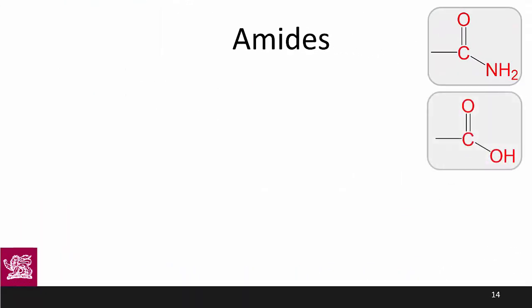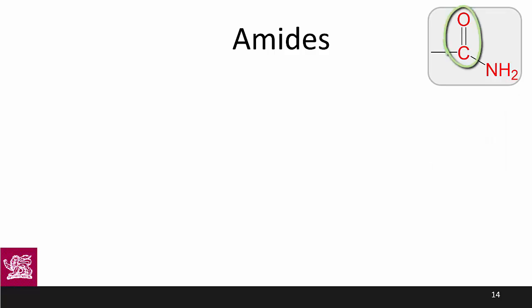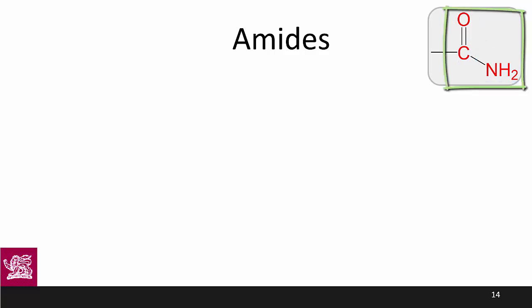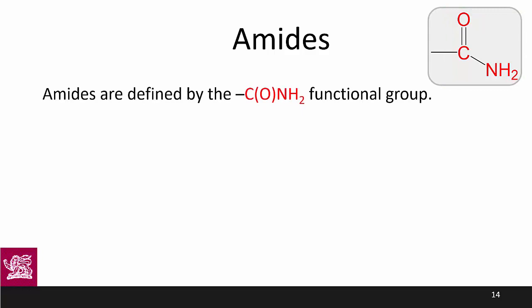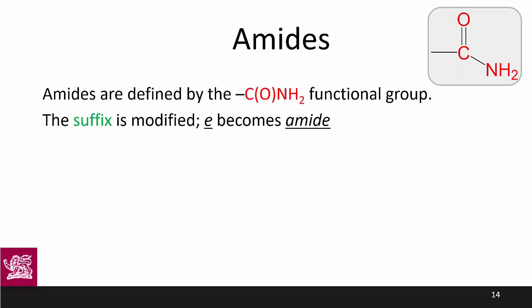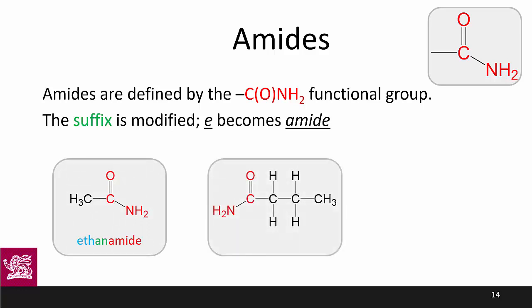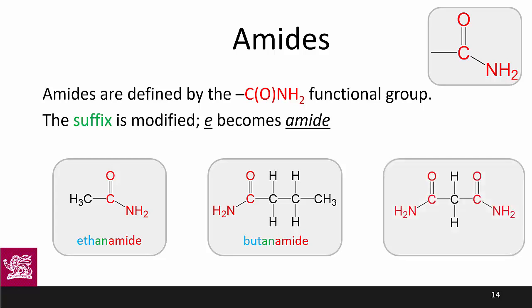Moving on now to amides — the cousin to carboxylic acids. They are one carbon double bonded to oxygen, and the same carbon is single bonded to nitrogen which has two hydrogens attached. This is an amide: it's neither a ketone nor an amine, but its own distinct class of compounds with its own distinct chemistry. In naming amides the suffix '-e' becomes '-amide'. A simple example is ethanamide. Next is butanamide. Our final example is propanediamide — diamides retain the '-e' of the suffix. We don't need to number our amide position since, like carboxylic acids and aldehydes, it's a terminal group and must be on the end of the chain.